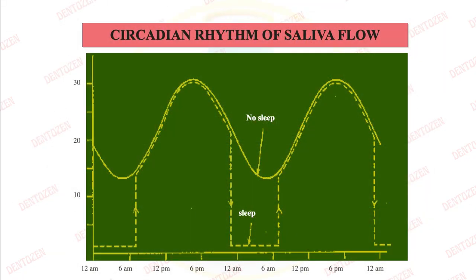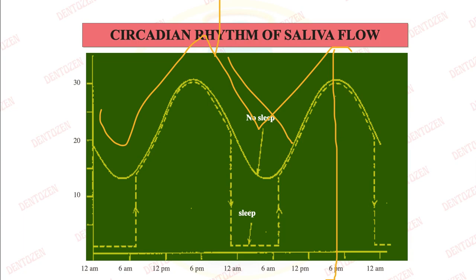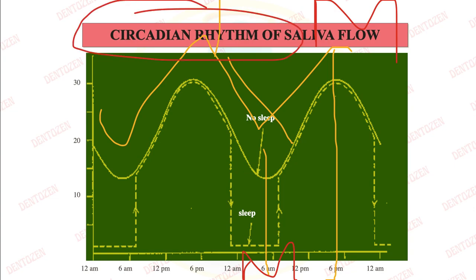Let's see what circadian rhythm is. Circadian rhythm means the flow of saliva follows a rhythm — it increases and then decreases. Saliva flow is maximum at about 2 to 4 pm during the day but is minimal during early morning. This increasing and decreasing pattern is called the circadian rhythm of saliva flow. That is all for today's video; I hope you liked it. Please like the video and follow my channel. Keep learning, keep sharing, see you in the next video, take care, bye bye.